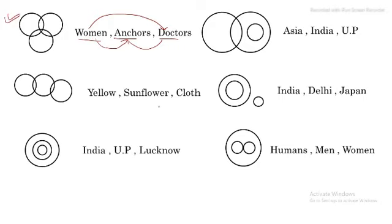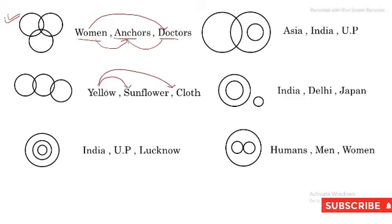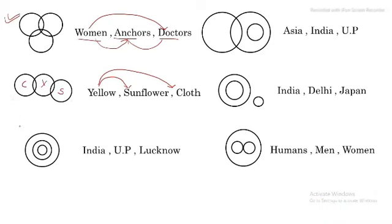Now see — yellow, sunflower and clothes. Sunflower is of yellow color. Cloth can also be yellow. So this circle represents yellow color, and this is sunflower, and this is cloth. This type of relationship can be shown by this type of Venn diagram — where two items partially overlap within a broader category.